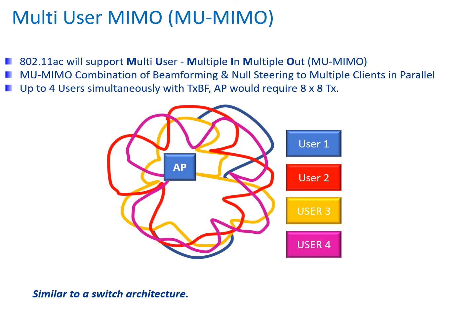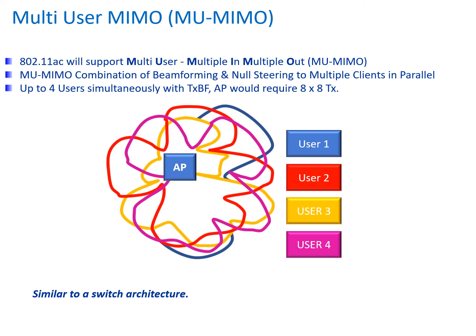With 802.11ac and the introduction of multi-user MIMO combined with beamforming, much more flexibility is being introduced. MIMO can actually combine beamforming and null steering to support multiple clients in parallel. With an 8x8 array, up to four users can be simultaneously supported with transmit beamforming, though the access point will require this 8x8 array and it will be some time before these systems are deployed. Initially, we will see access points supporting 4x4 arrays, enabling up to four users in parallel — the most efficient use of the MIMO technology introduction.